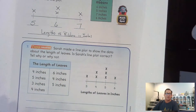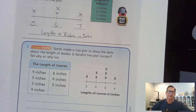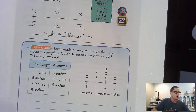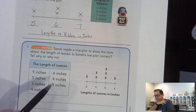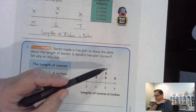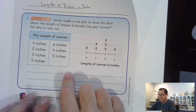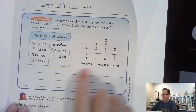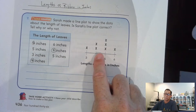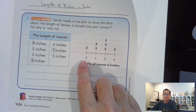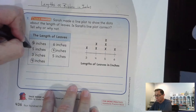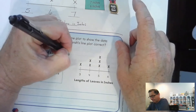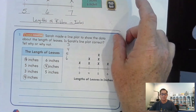For number seven: Sarah made a line plot to show data about the lengths of leaves. Is Sarah's line plot correct — tell why or why not? She has seven X's total, which matches seven leaves. Her title 'Lengths of Leaves in Inches' is correct. But looking at her fours — she only has two X's above four when there should be three.